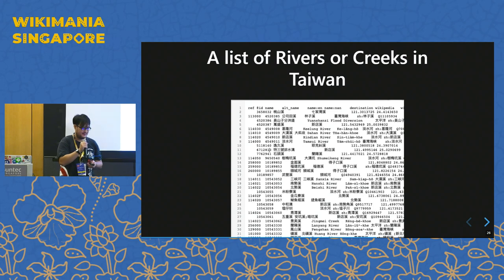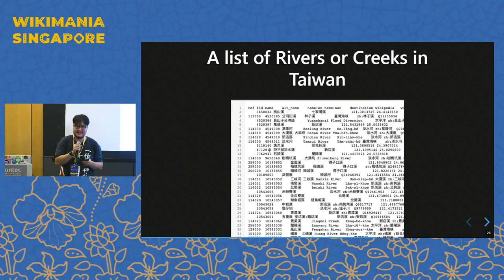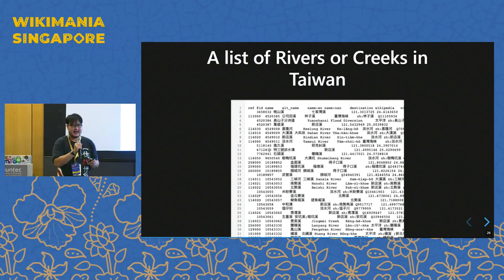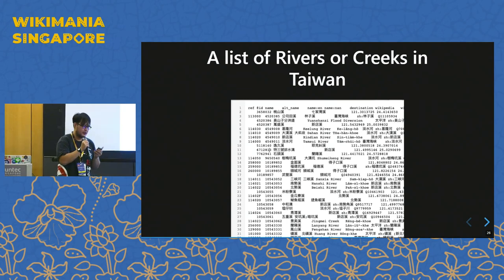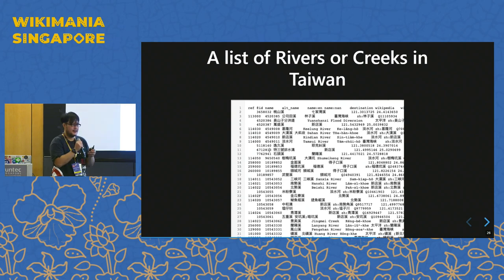Here's a quick view of the rivers in Taiwan. We have done cross-linking: we created Wikidata items, linking to Wikipedia articles, linking to OpenStreetMap relation IDs, and some also have geocoordinates, like the mouth of rivers or creeks.